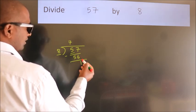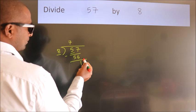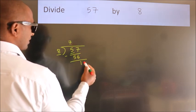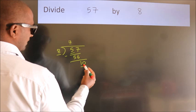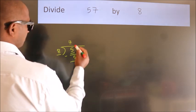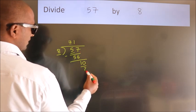After this, no more numbers to bring it down. So what we do is, we put dot, take 0. So, 10. A number close to 10 in 8 table is 8 times 1 equals 8.